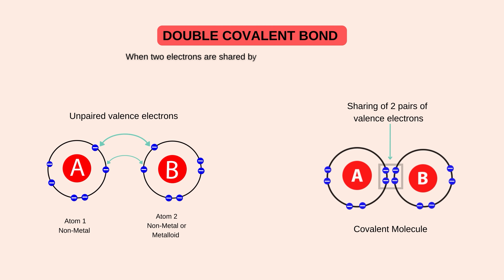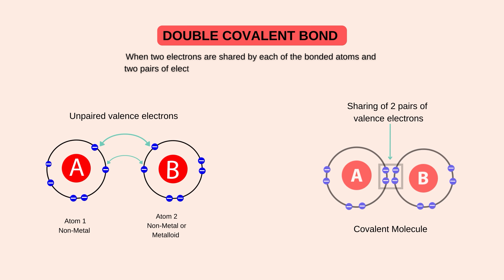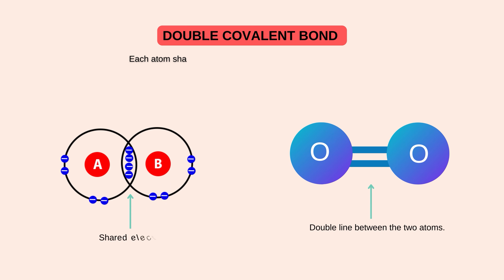Double covalent bond — by definition, when two electrons are shared by each of the bonded atoms and two bond pairs of electrons are formed, it is called double covalent bond. Asan alfaz mein, double covalent bond covalent bond ki wo qisam hai, jis mein dono atoms dho dho electron ki mutual sharing kerte hai, aur dho bond pairs wujud mein aate hai. Jaisa ke aap ko video mein nazar a raha hai, double covalent bond ko atoms ke dhermian double line se indicate kiya jata hai.